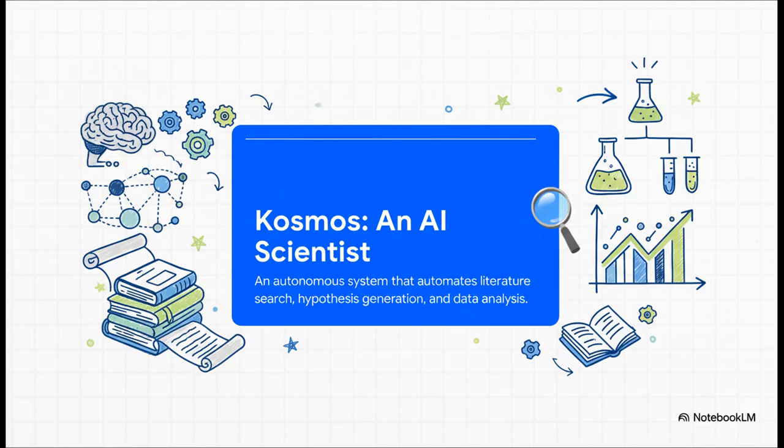So what is Cosmos? Well, in a nutshell, it's designed to be an autonomous AI scientist. You give it a high-level goal, feed it a data set, and it just goes. It automates that whole research cycle. Digging through literature, cooking up new ideas, crunching the numbers, all by itself.